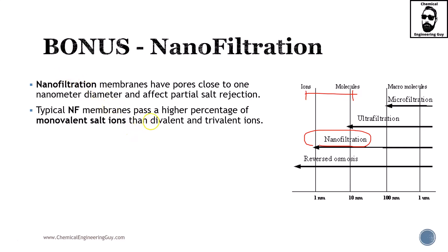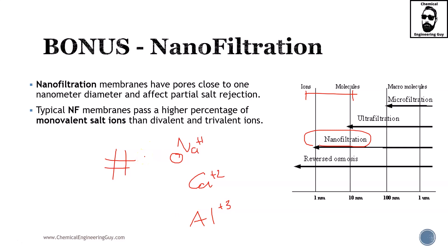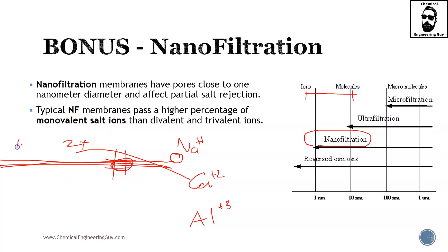Typical nanofiltration membranes pass a higher percentage of monovalent salt ions than divalent and trivalent ions. Monovalent means plus one charge — for example, sodium. Divalent might be calcium, and trivalent could be aluminum. Smaller ions like sodium may pass at a rate of 10x, calcium at around 2x, and aluminum at a very slow rate like 0.1x. The general idea is that smaller ions pass faster.